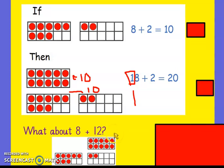So what about eight and twelve? It's going to be the same, isn't it? Eight add two is ten. There's our number bond. So we know those two added together make ten. And then we've got ten more there. So ten and ten is twenty. So we're adding to make twenty. We're using our number bonds to help us, okay?